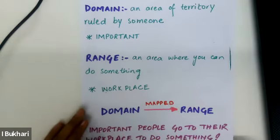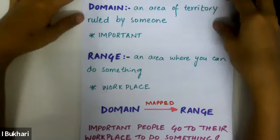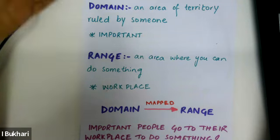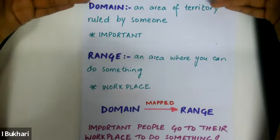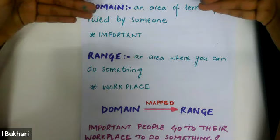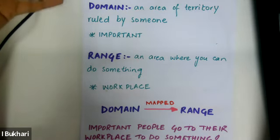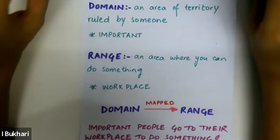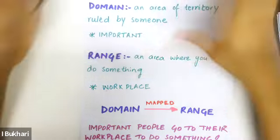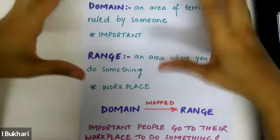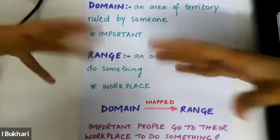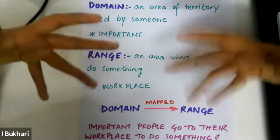In English, a domain is an area of territory ruled by someone — so it's something important. Range is an area where you can do something, like a workplace. So a domain is mapped onto a range: important people go to their workplace to do something.